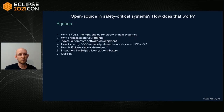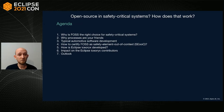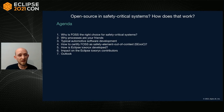Let's have a look at the agenda. I want to first talk about why FOSS is the right choice for safety-critical systems, then briefly elaborate why processes are actually your friends and can be beneficial, then talk about the typical automotive software development process, and then jump into how one can safety-certify free and open source software as a Safety Element out of Context — a term from the ISO standard meaning there are certain assumptions when you certify your software, for example you're not sure about the underlying hardware.